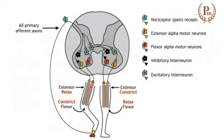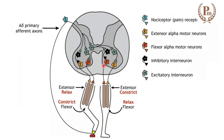Withdrawal or flexion. Now your center of gravity has moved away, and the whole body weight is being borne by the opposite limb. Had there not been such an arrangement, the person would have fallen down — due to the withdrawal reflex, if only the affected limb reacted, the person would definitely fall down.